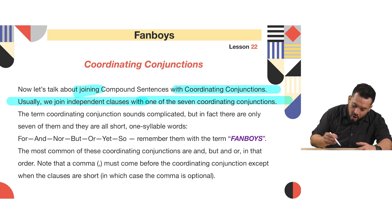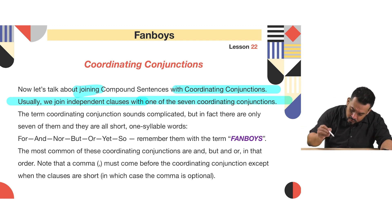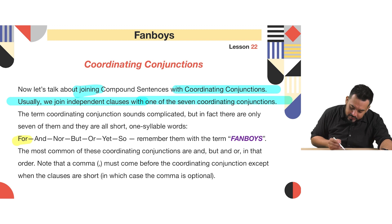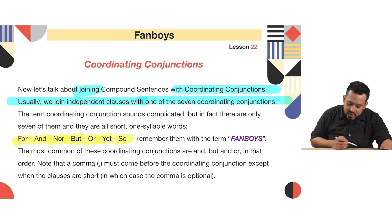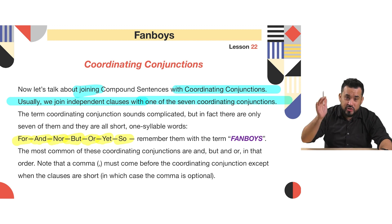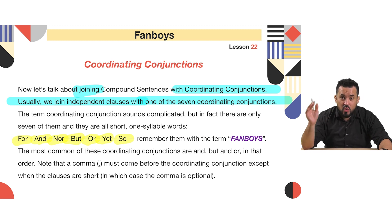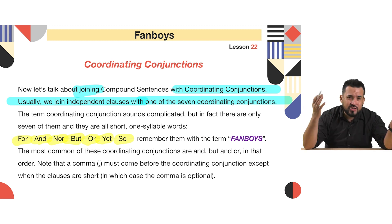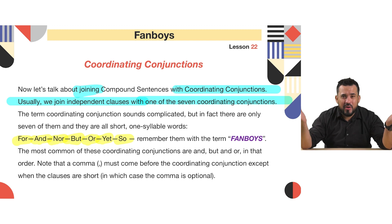The seven coordinating conjunctions are: for, and, nor, but, or, yet, so. Those are the seven coordinating conjunctions — 'coordinating conjunction' is a very big word that doesn't roll off your tongue.